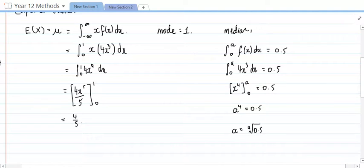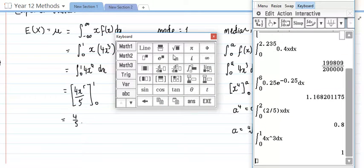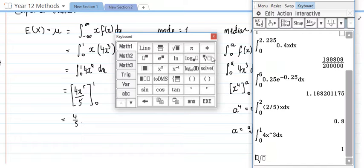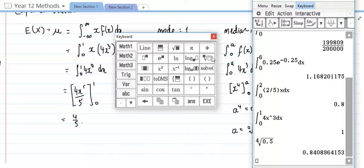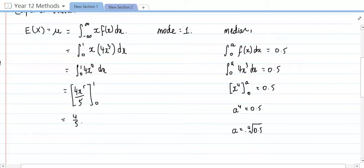Now, it should technically be plus or minus the 4th root, but in this case having a negative value of A doesn't really make much sense. So I'm just going to get my calculator here, and I'm going to do the 4th root of 0.5, and it works out to be 0.841. So, A equals 0.841, and that's it really.